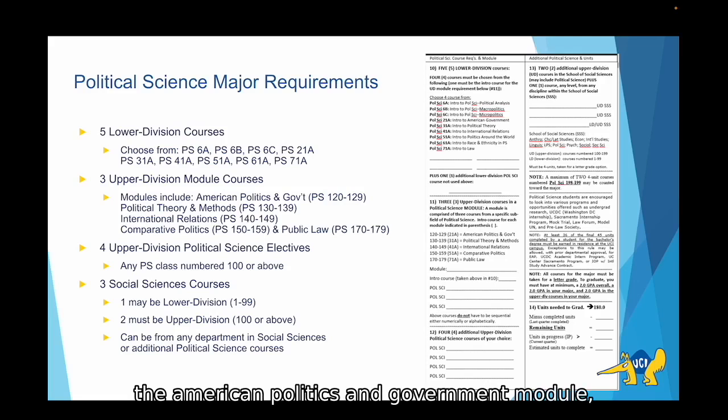You can see here that for the American politics and government module that will be any class numbered 120 through 129. One thing to make sure is that for whichever module you choose you want to make sure you've also taken the introductory course for that module. So for example if you were planning to take the American politics and government module you will need to make sure that you also took poli-sci 21A.